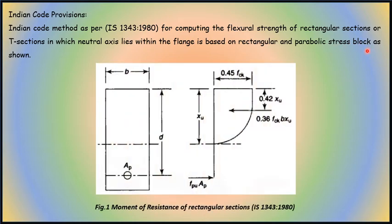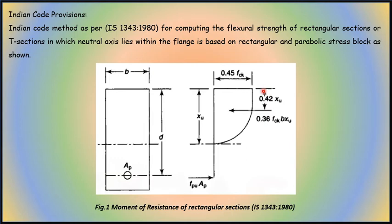The moment of resistance for rectangular sections in IS 1343 uses a parabolic stress distribution. The compression force applied by the concrete is 0.36 FCK × B × XU, where XU is the neutral axis depth from the top fiber. The tension applied by the pre-stressing tendons is FPU × AP.